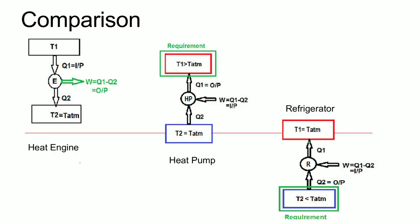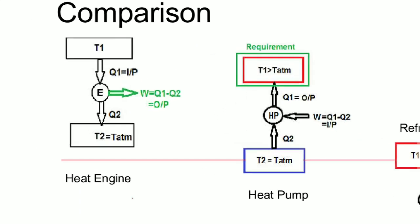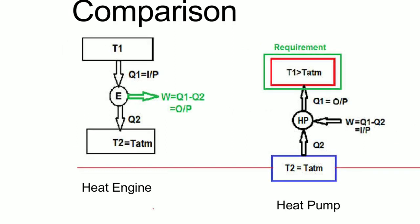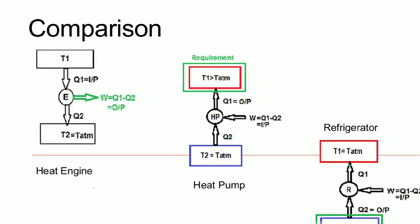While comparing the heat engine, heat pump, and refrigerator, the reference line for comparing these three is the atmospheric temperature. In this diagram I have drawn one red colored horizontal line that indicates the atmospheric temperature. The heat engine operates above this atmospheric temperature.